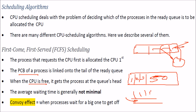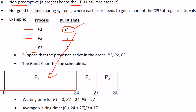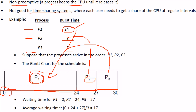For example, if P1 takes 50 burst time units and P2, P3 each take only 1–3 units, those short processes are stuck waiting — like a road convoy where everyone must wait until a minister's convoy passes. FCFS is non-preemptive; the process keeps the CPU until it releases it, making it unsuitable for time-sharing systems where equal CPU time per process is desired.